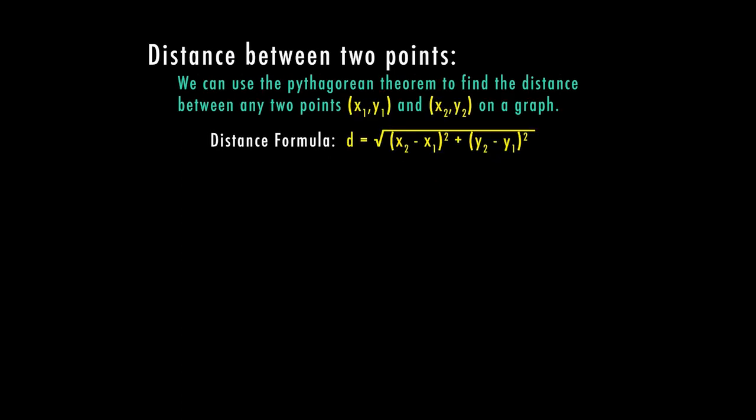So we can also use the Pythagorean theorem to find the distance between two points by using the ordered pairs. We would have an x₁ and a y₁, and we would also have an x₂ and a y₂ on a graph. Now we will have three points. So I'm going to have to show you how to plug this into the formula because it can get a little bit tricky.